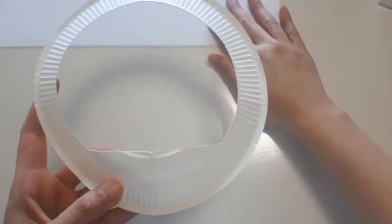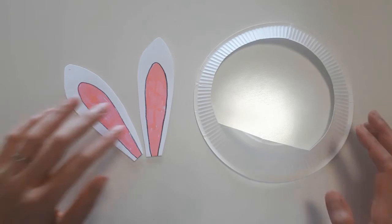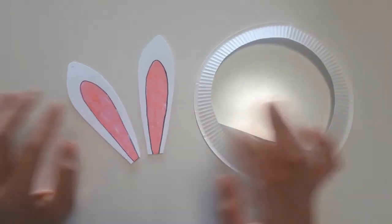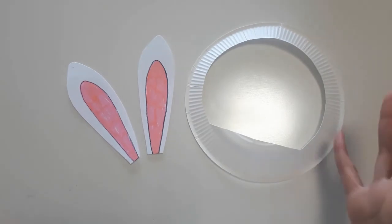And then next, you just cut out your rabbit ears. So now you have rabbit ears and the cut paper plate. We're going to put them together.